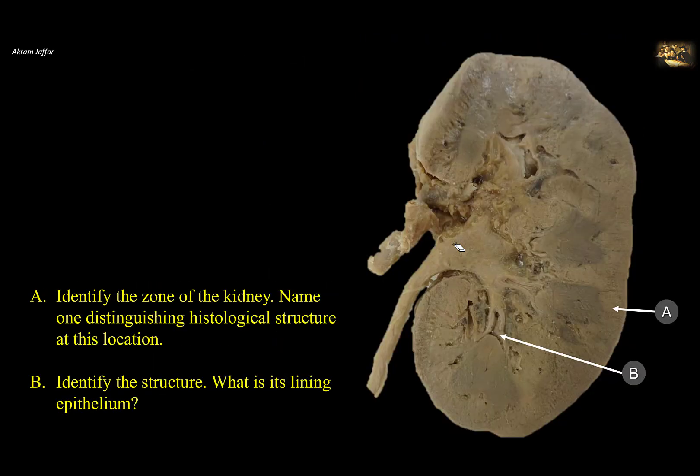Identify the zone of the kidney, name one distinguishing histological structure, and identify this structure — what is its lining epithelium? This is a longitudinal section of the kidney.